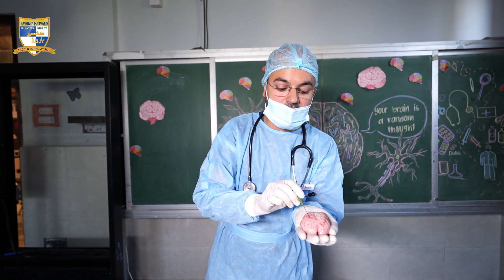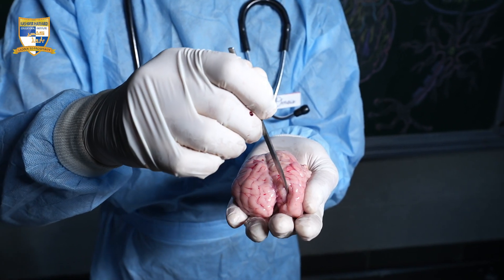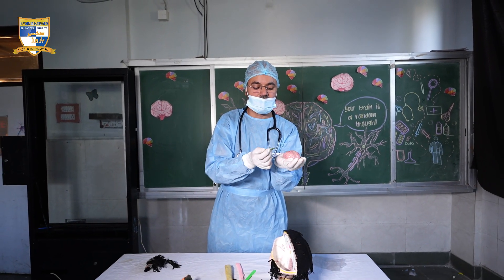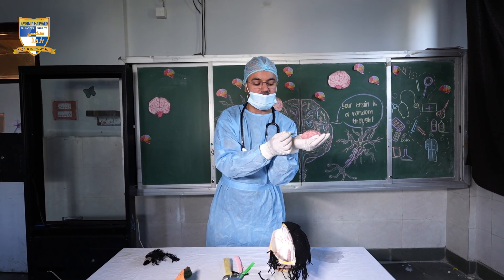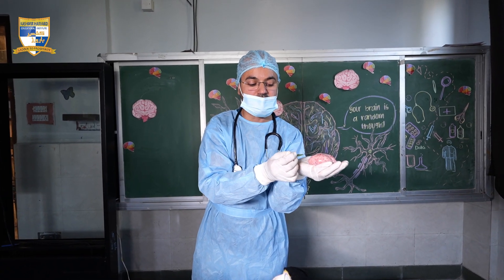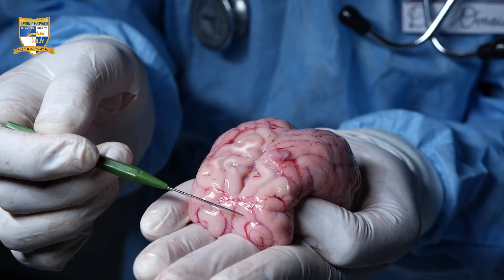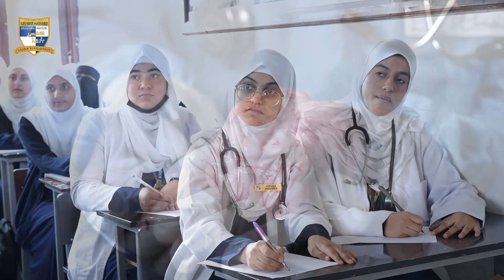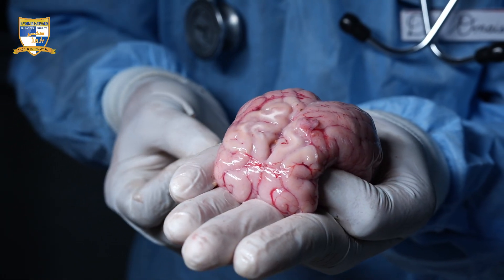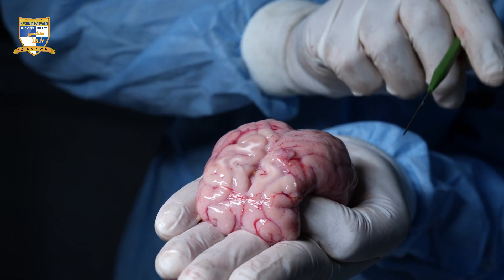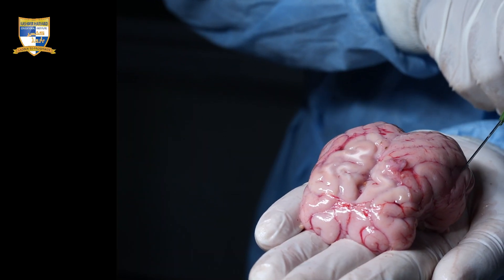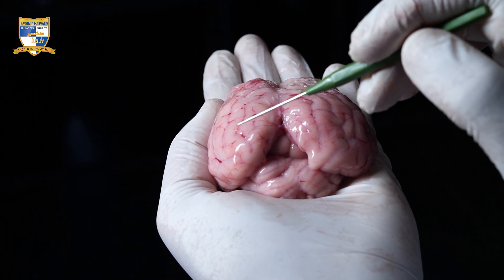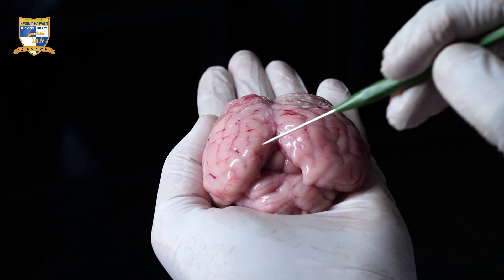The cerebrum is divided by the longitudinal fissure into two hemispheres — the right cerebral hemisphere and the left cerebral hemisphere. We have a frontal lobe here. Moving on, we have a temporal lobe from this side and another temporal lobe from this side. You can also see two parietal lobes right here — the left parietal lobe and the right parietal lobe.